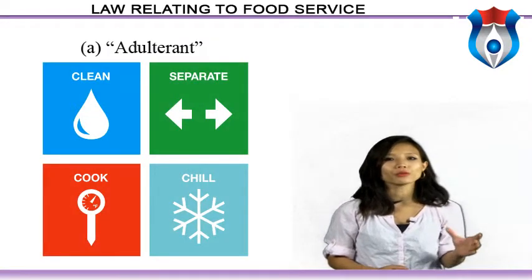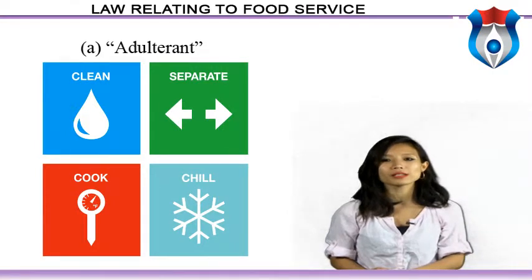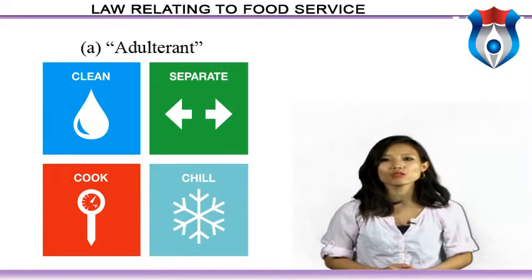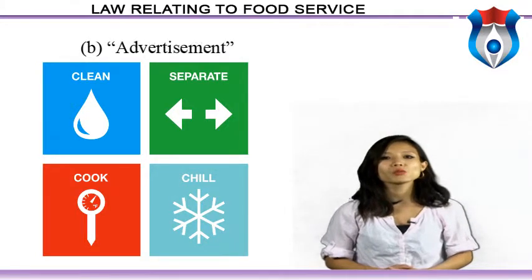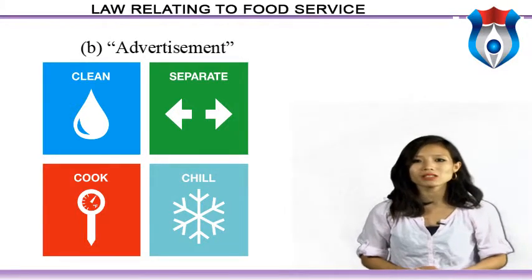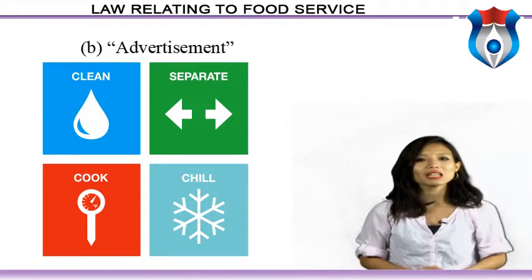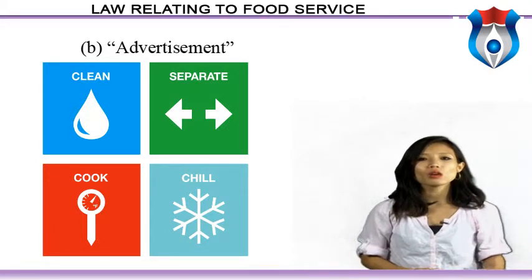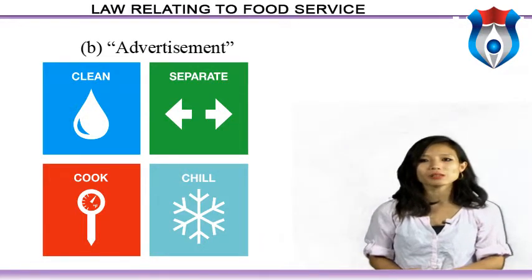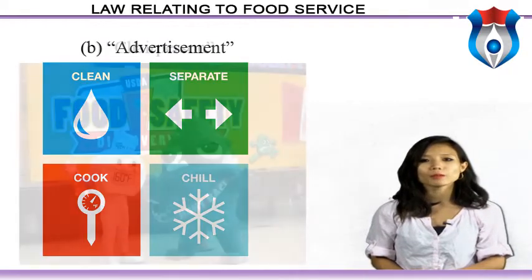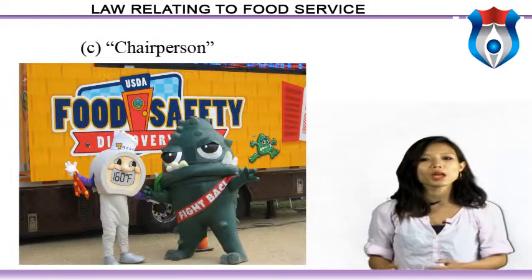Adulterant means any material which is or could be employed for making food unsafe, substandard, misbranded, or containing extraneous matter. Advertisement means any audio or visual publicity, representation or pronouncement made by means of any light, sound, smoke, gas, print, electronic media, internet or website, and includes any notice, circular, label, wrapper, invoice or other documents. Chairperson means the chairperson of the food authority.